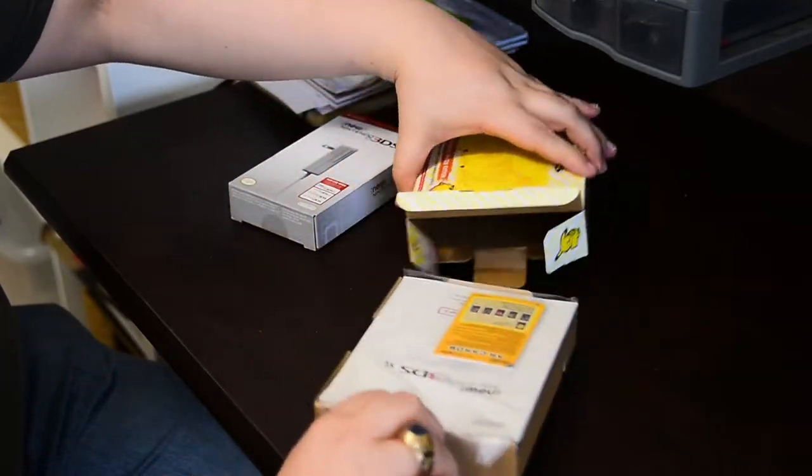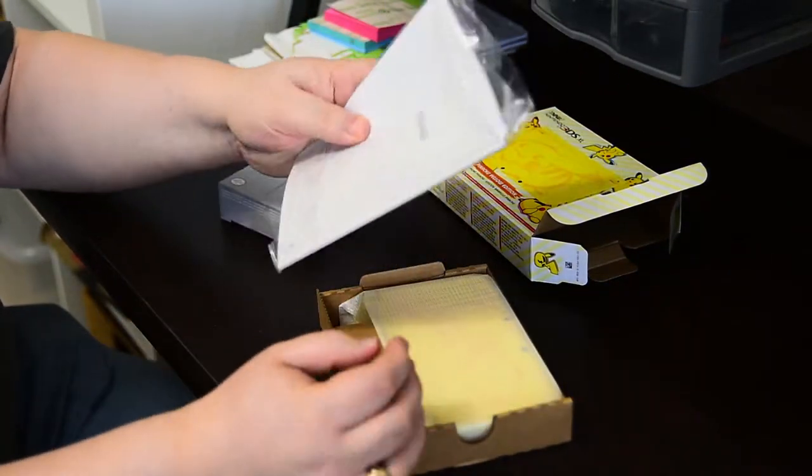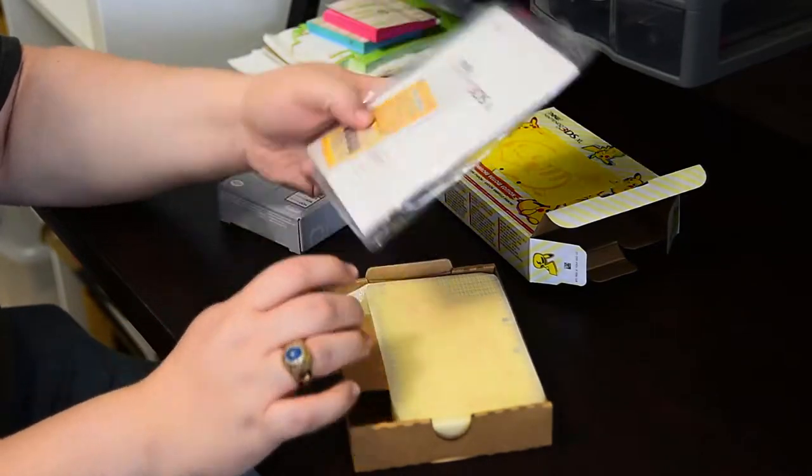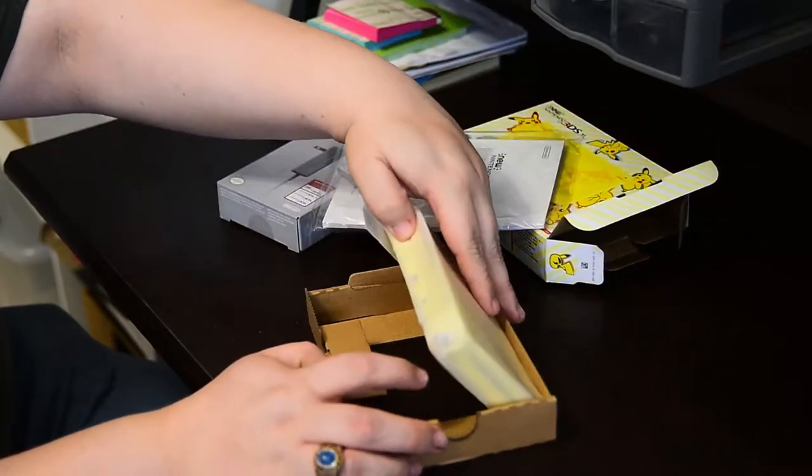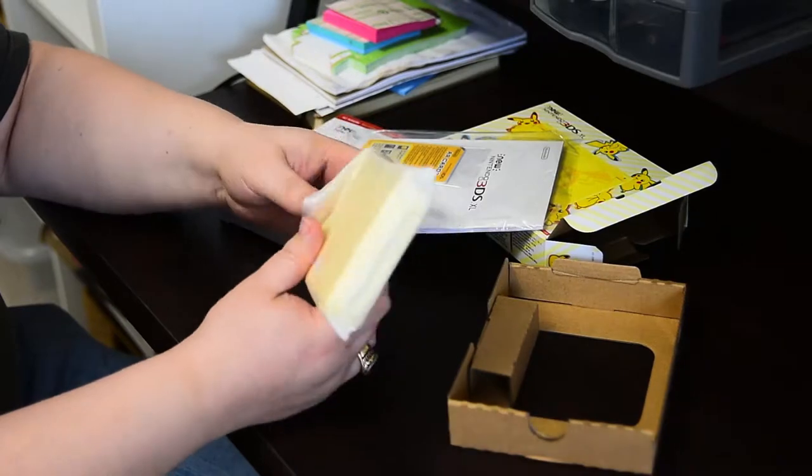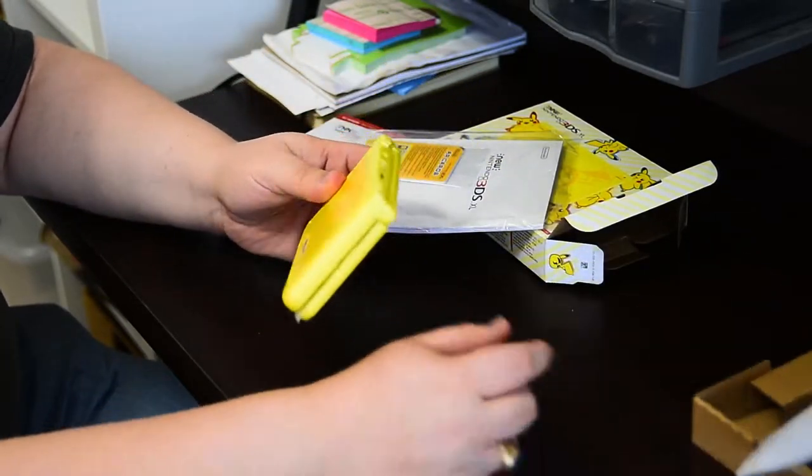And this drawer should just slide out and right here we've got the 3DS XL manual and those AR cards that no one ever uses really. And then the actual device. No charger. That's why we had to buy a separate charger. But here's the device itself.